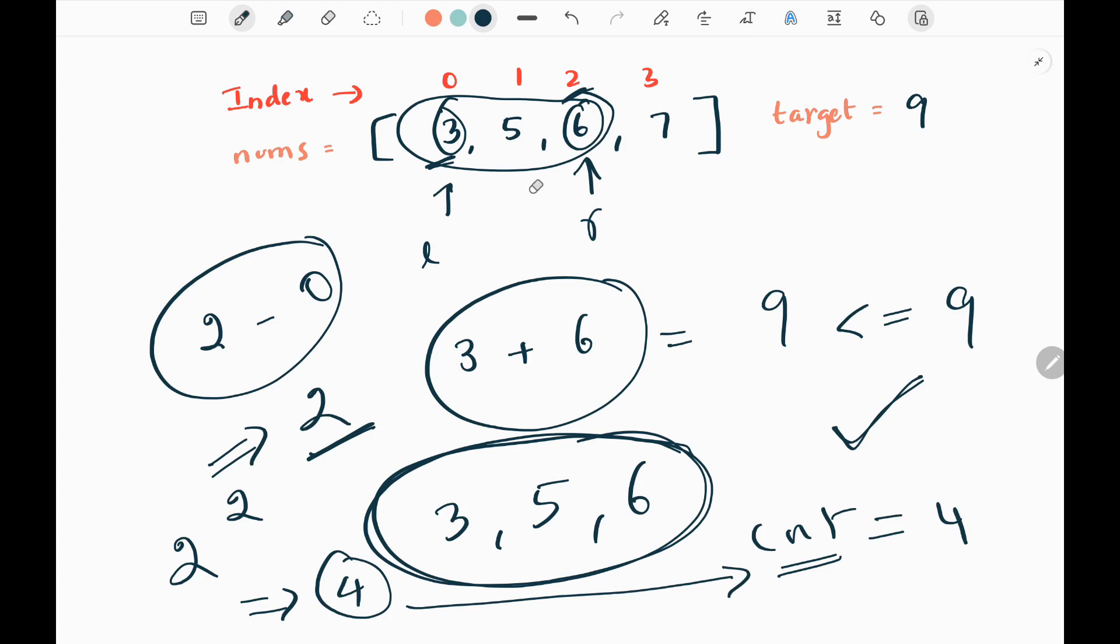After doing that, I will move my left pointer. If the condition fails, I will move my right pointer. If the condition is satisfied, and after calculating the count, I will move my left pointer. So now I will add 5 and 6. If I add 5 and 6, I'm going to get 11. This condition fails. So I will move my right pointer.